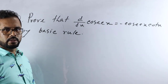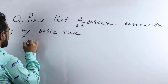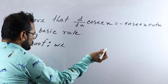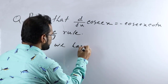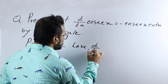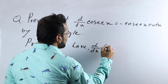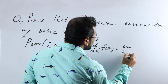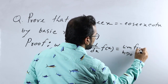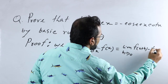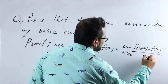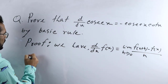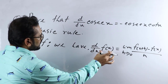Here I am writing the basic rule first. We have d/dx of f(x) is equals to limit h tends to 0, f(x+h) minus f(x), divided by h. This is our basic rule.